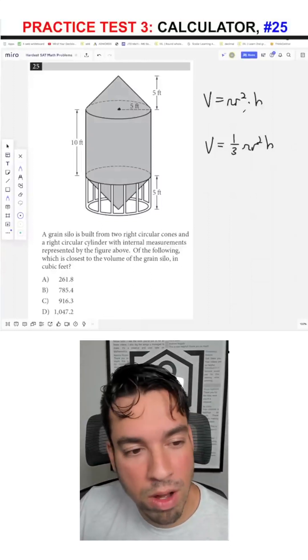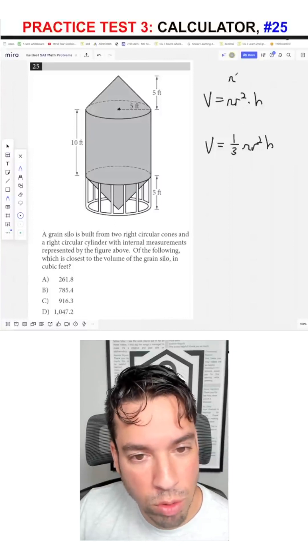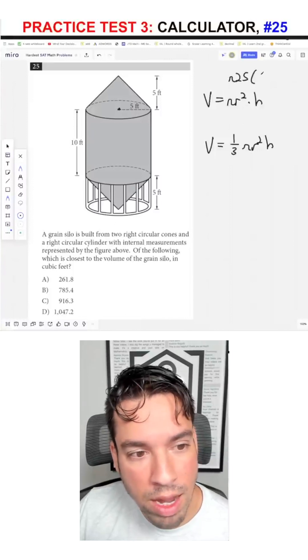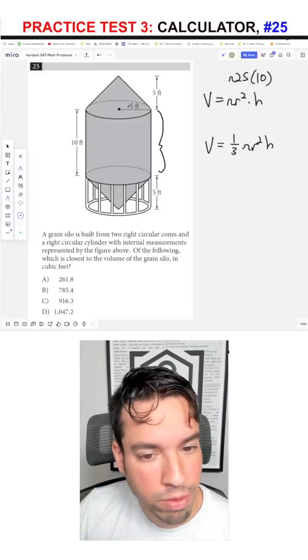First, let's plug and chug for the volume of the cylinder. It's pi times 5 squared, which is 25, times the height, which is this whole section, which is 10. And there we have an expression for that.